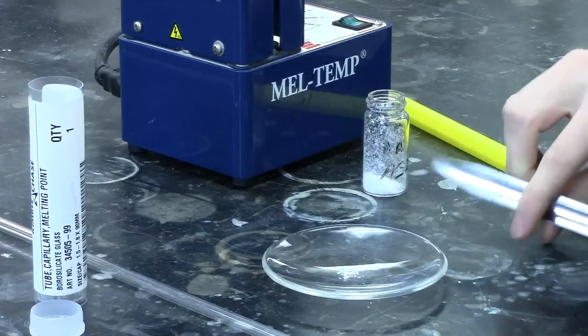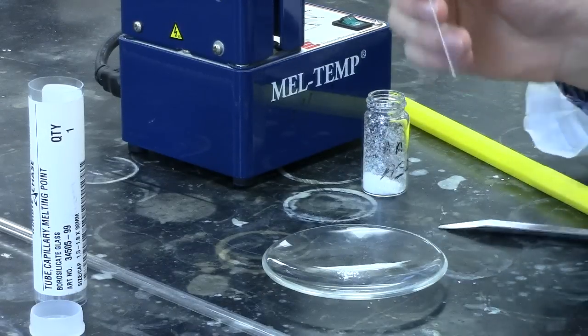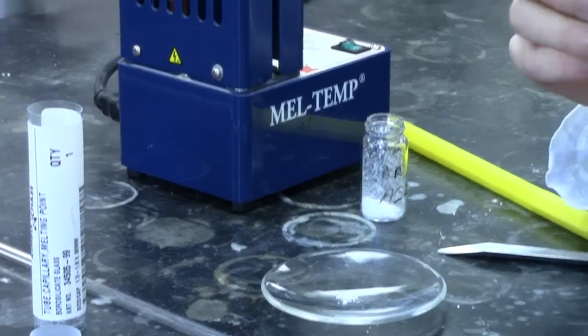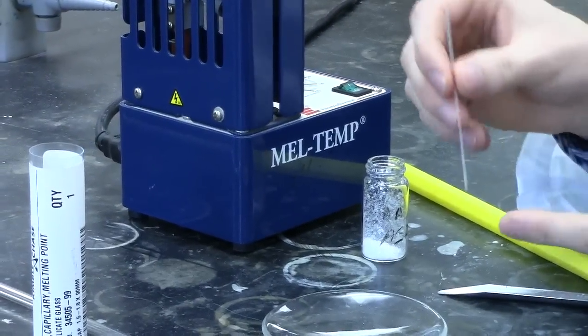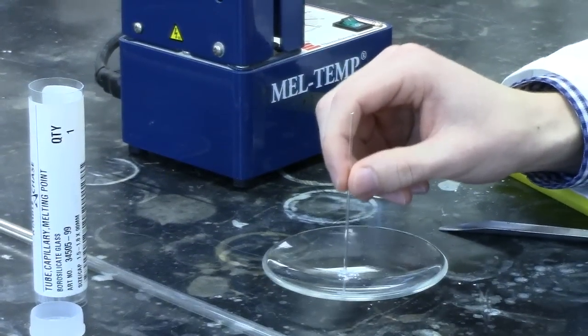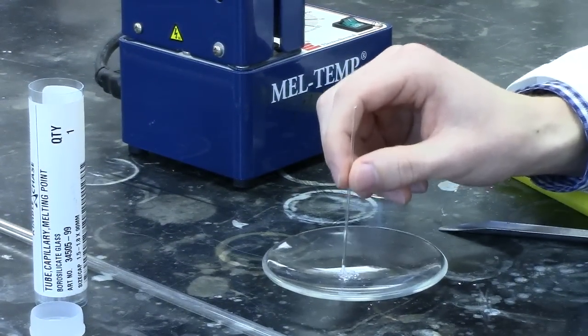The reason you want your sample in a fine powder is because you'll be dabbing the open end of this capillary tube into the sample in order to bring the sample up into the tube itself. You'll be looking to put at least one to two millimeters of sample into the tube.